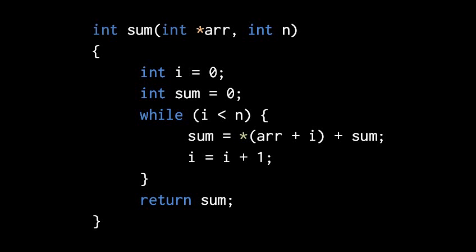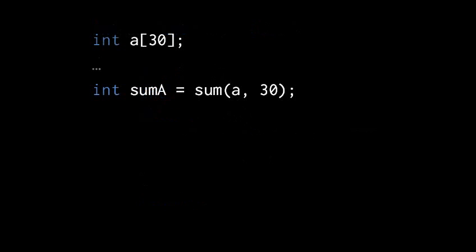So when we call sum we might do so with an array. Here we declare an array of 30 ints, and then we assign values to those ints and then call sum, passing in a, which remember is a pointer value, and we pass in 30.